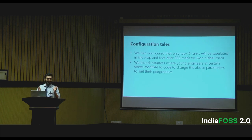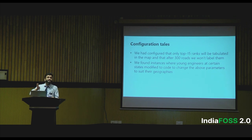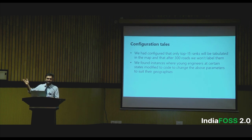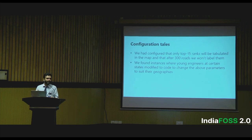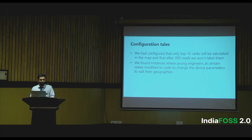The plugin was Python code that was open source, and we shared it with all the states. Certain states started modifying the code. This could have been risky — they could have changed the algorithm — but the instances we knew about: the algorithm created a map and tabulated the top 15 roads on the right. Certain states thought top 15 wasn't enough; they wanted top 20 or top 30, so they modified the code themselves. These were civil engineers who had never coded, but they were opening the script and making those modifications to suit their own geography. This was heartwarming, though we were a bit concerned they might also change the algorithm — but their incentives weren't aligned to do that.